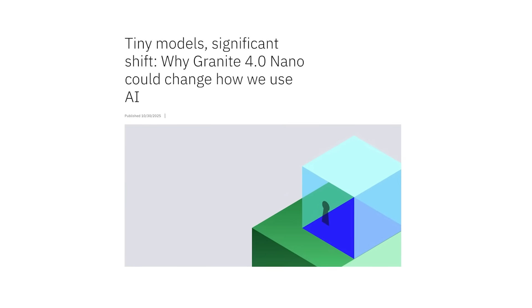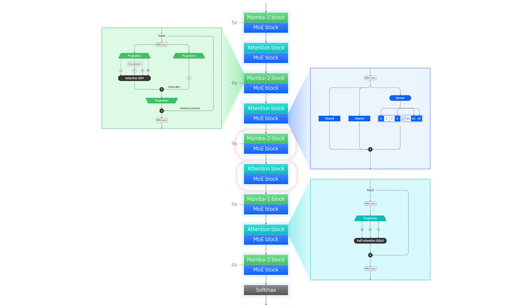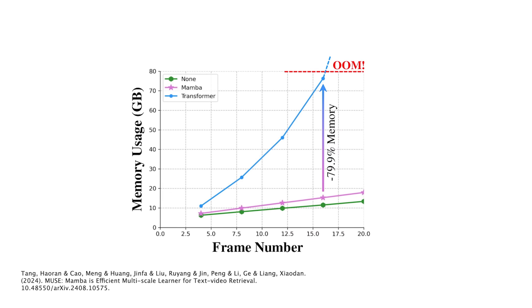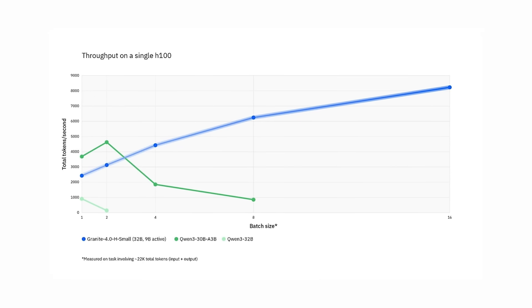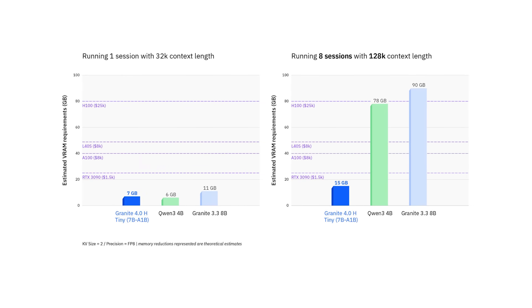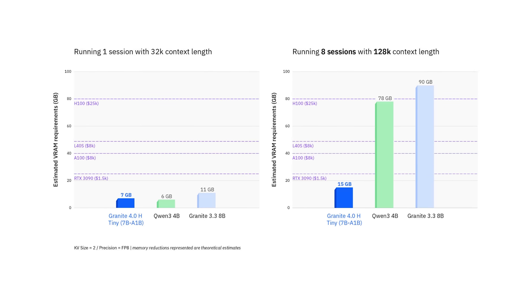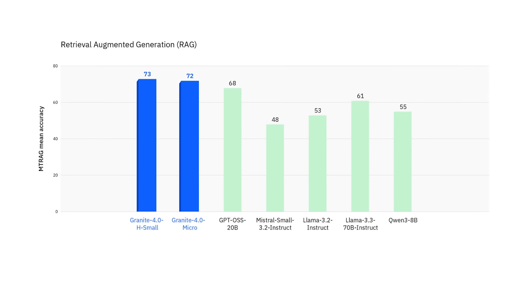Granite 4.0 — this model family is built around a pretty interesting idea. Instead of relying only on the classic transformer stack, IBM mixed transformer layers with something called Mamba layers. Transformers are great at language understanding, but they get expensive as sequences get longer. Mamba layers handle long context more efficiently, and the Granite 4 models were trained with very large context windows — we are talking hundreds of thousands of tokens. That means they can actually hold entire documents, code bases, technical specs, legal contracts, or large chat histories without constantly forgetting what happened earlier. For workflows like RAG, coding assistance, or research automation, that's pretty huge.